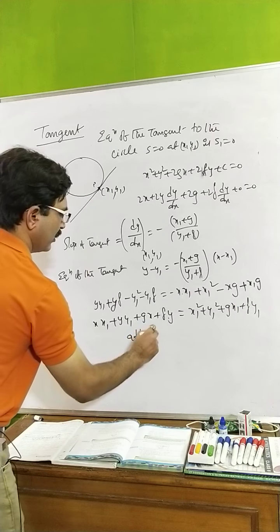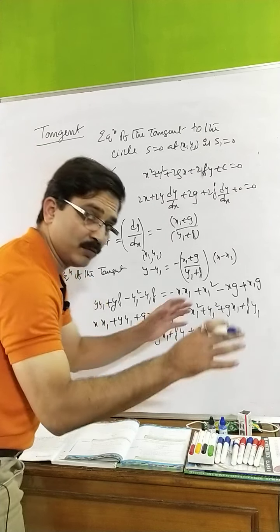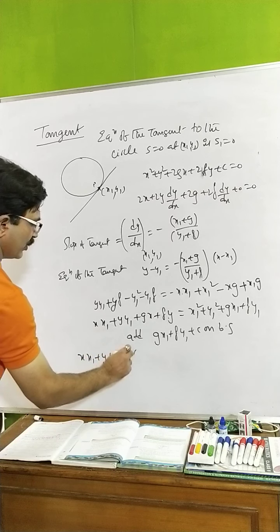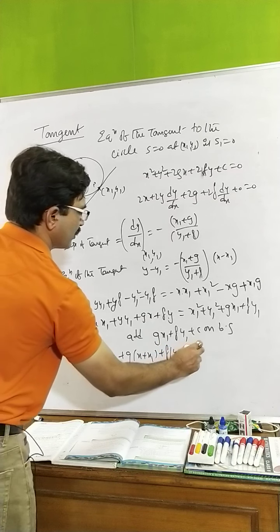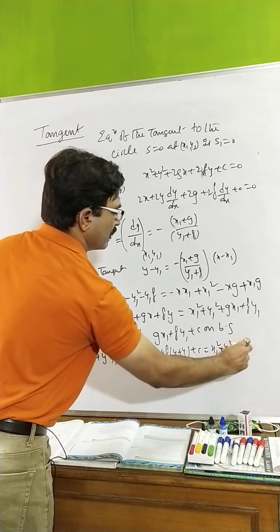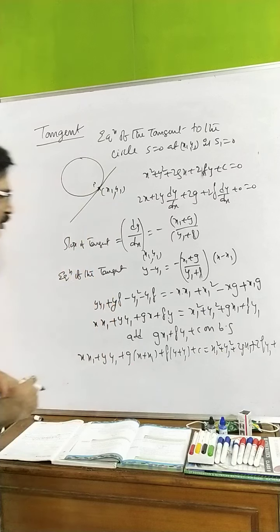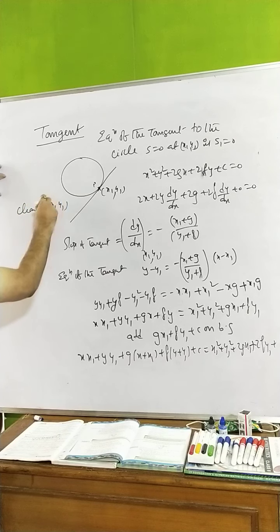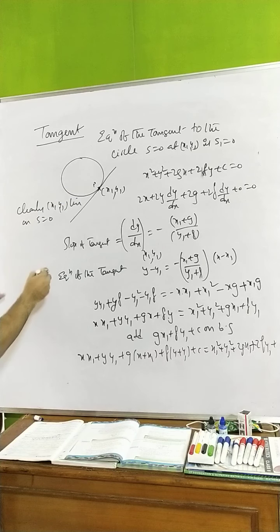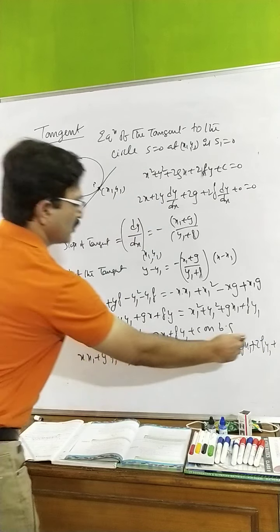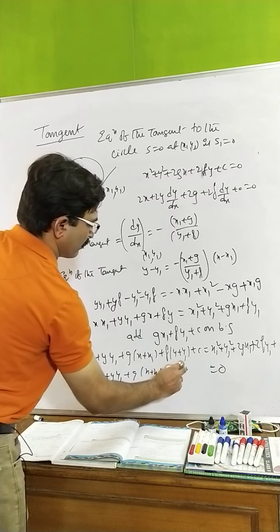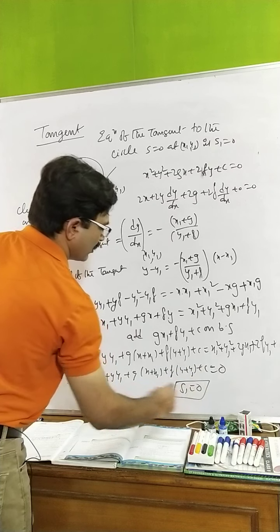Adding (gx1 + fy1 + c) on both sides, we get: xx1 + yy1 + g(x + x1) + f(y + y1) + c = x1² + y1² + 2gx1 + 2fy1 + c. Since (x1, y1) lies on the circle, S11 = 0, so the right side is 0. Thus the tangent equation is S1 = 0.